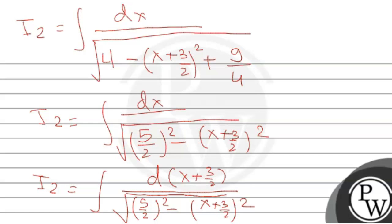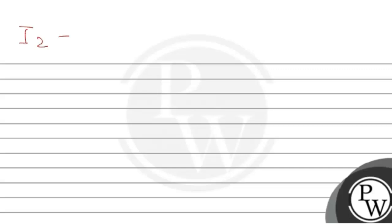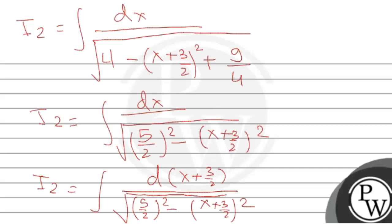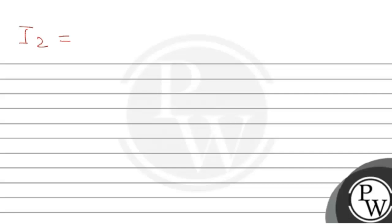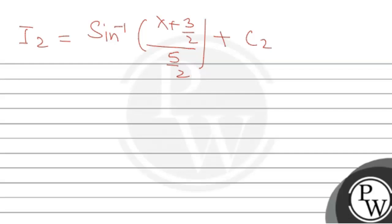Now we can apply the formula for ∫dx/√(a² - x²) = sin⁻¹(x/a) + C. Here x corresponds to (x + 3/2) and a corresponds to (5/2). Therefore I2 = sin⁻¹[(x + 3/2)/(5/2)] + C2, which simplifies to sin⁻¹[(2x + 3)/5] + C2, where C2 is the constant of integration.